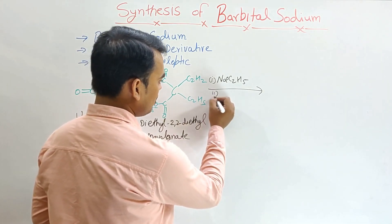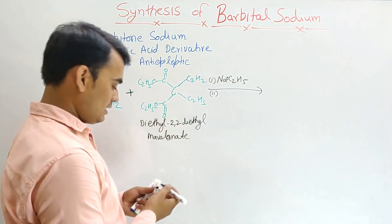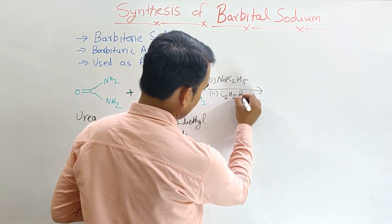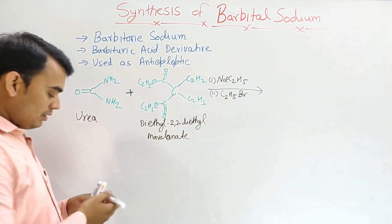Here. Followed by second reagent also used. Ethyl bromide, C2H5Br. Ethyl bromide.